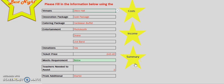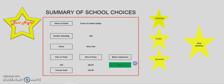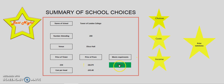Finally, I will select the summary tab. On this sheet, you will be presented with key details about the prom: school name, number attending, venue, price of ticket, cost per head, price of the overall prom, and if it meets requirements. You are also given the option to print the summary using the print summary button.